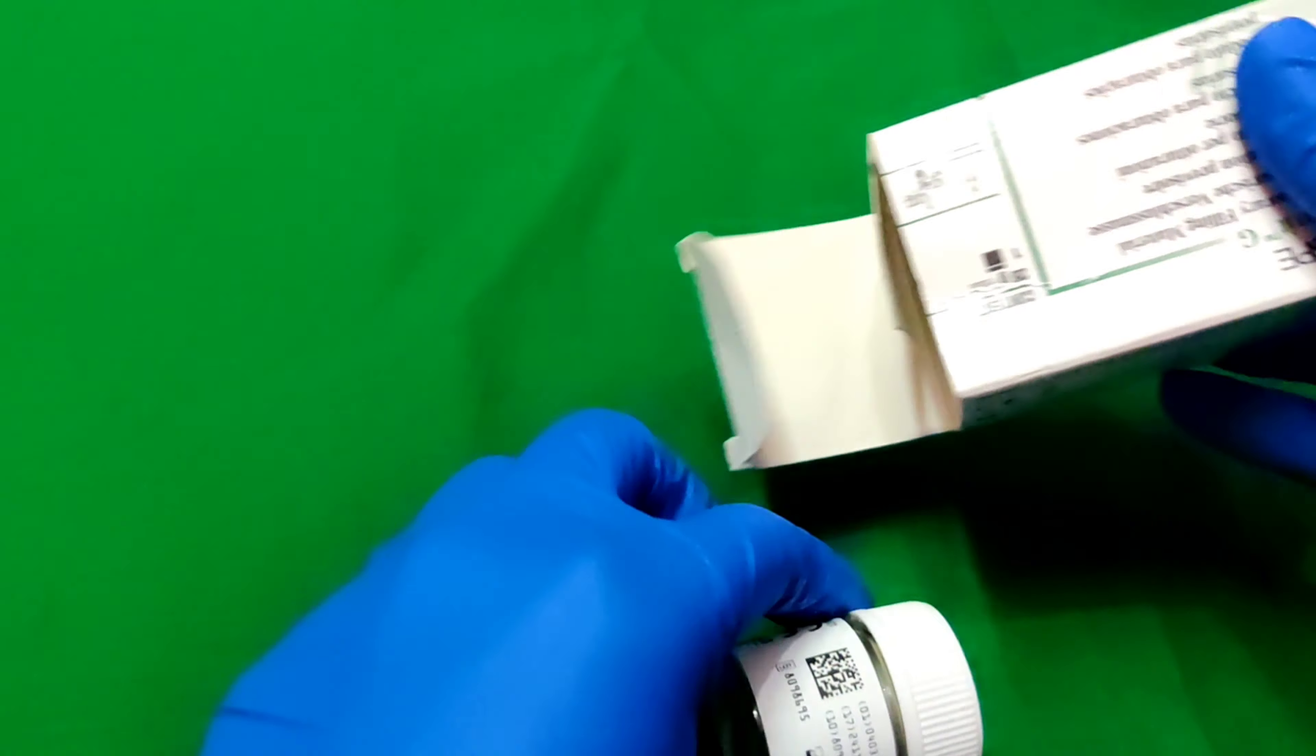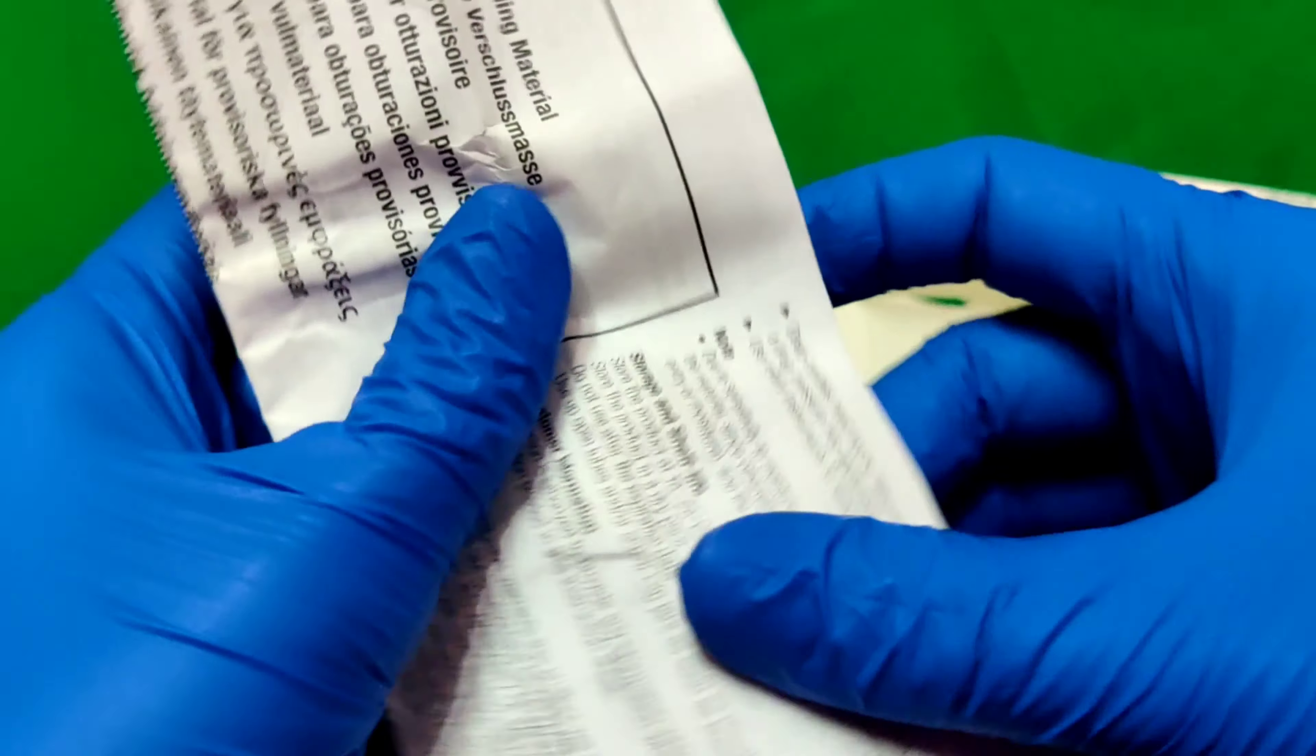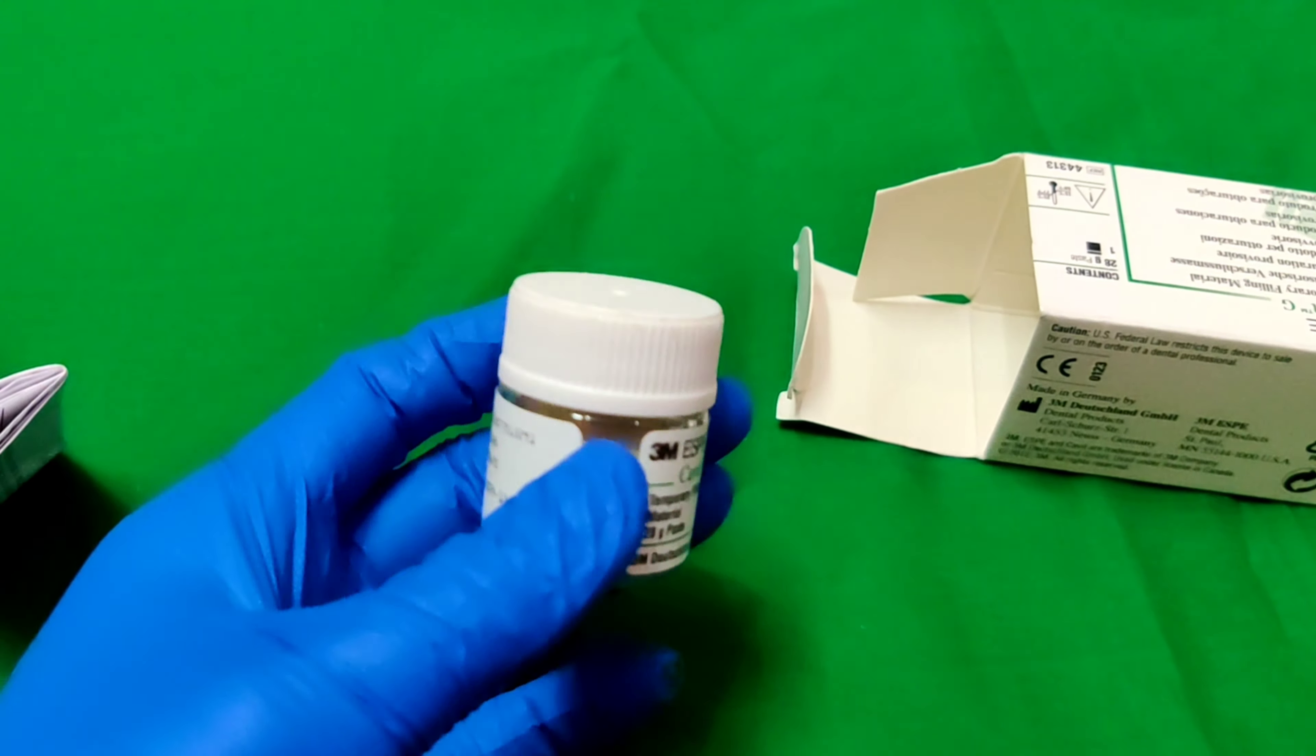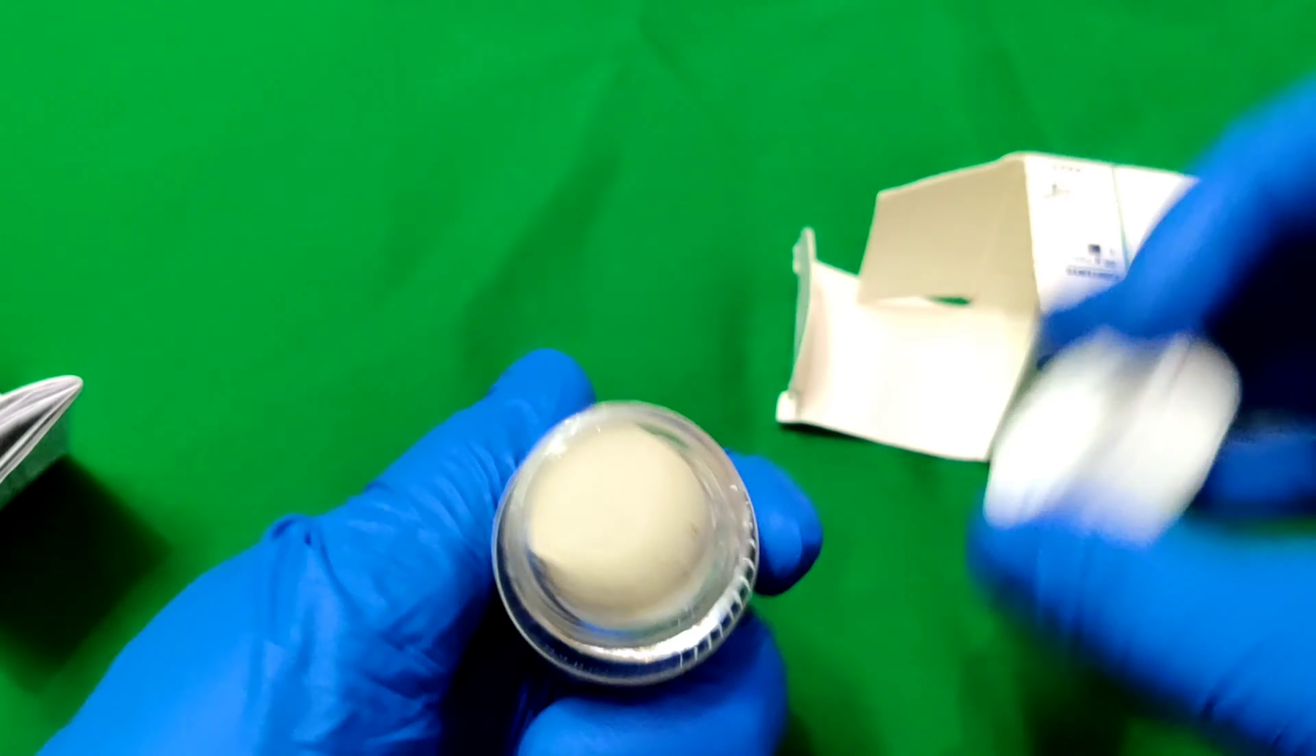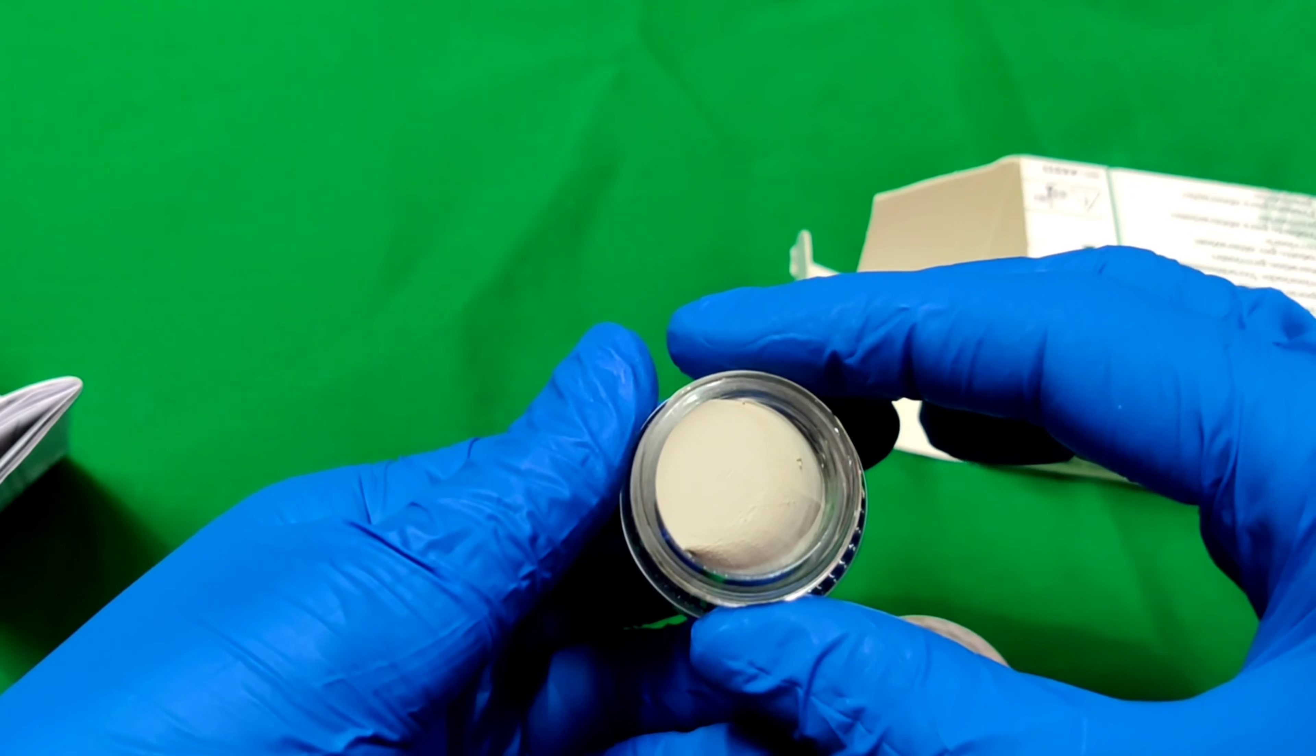Let's open this box. This is the bottle with a manual which you can read in different languages. Cavit comes in three varieties: Cavit W, Cavit G, and Cavit pink. Cavit G is gray colored and Cavit W is white colored. Today I am showing you Cavit G, which is gray colored, with a paste consistency.